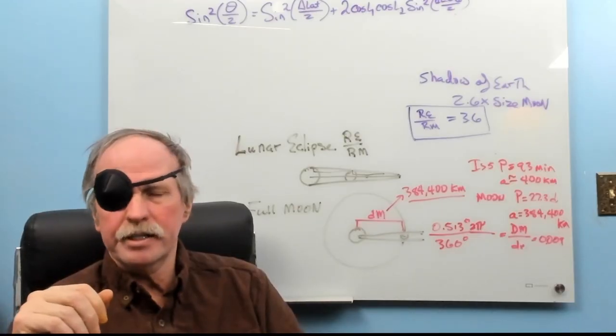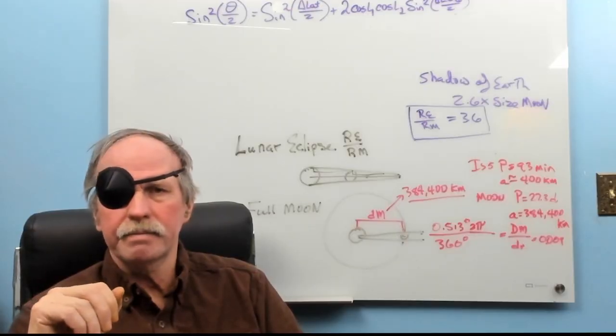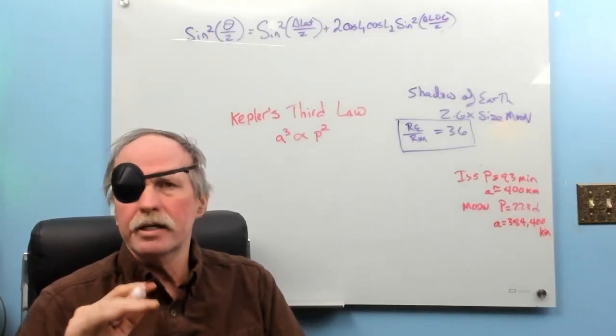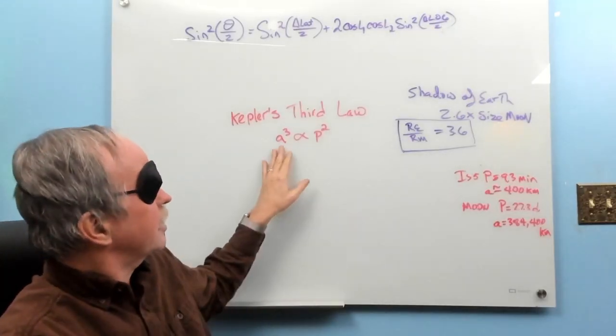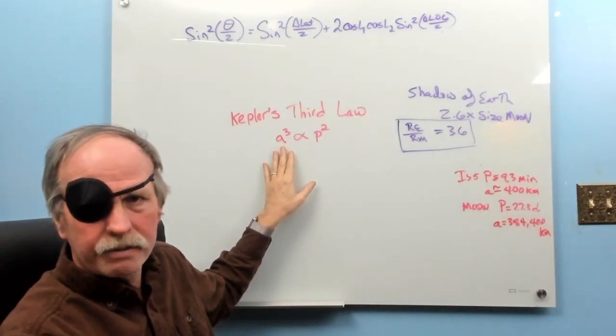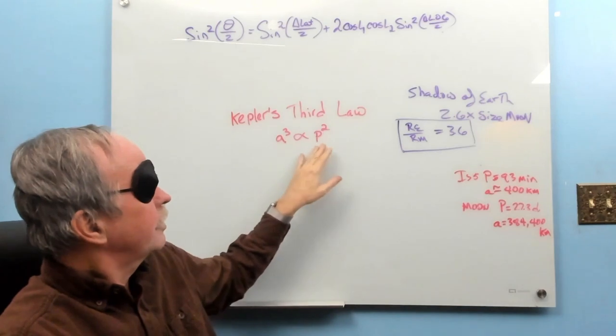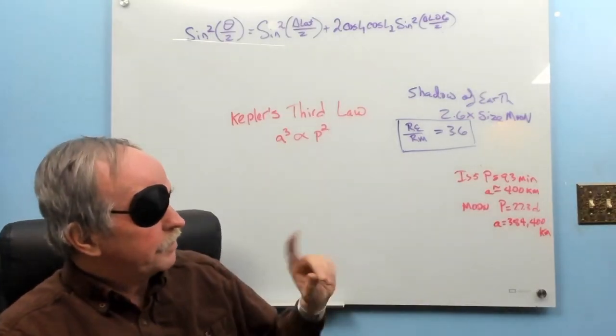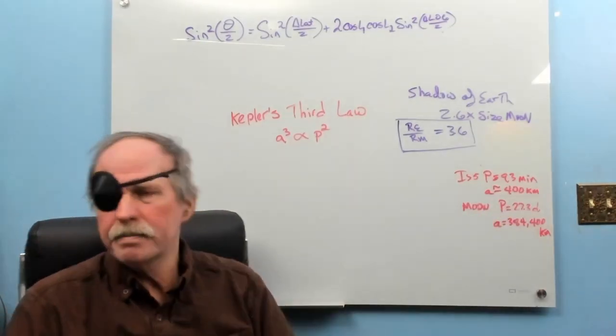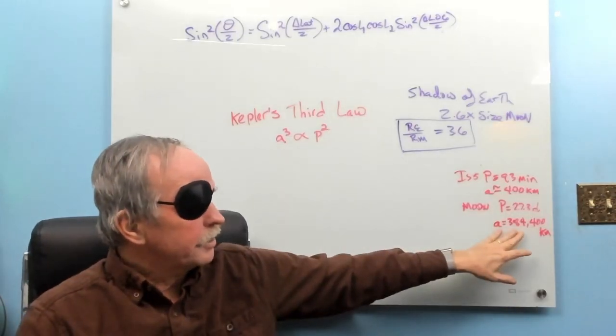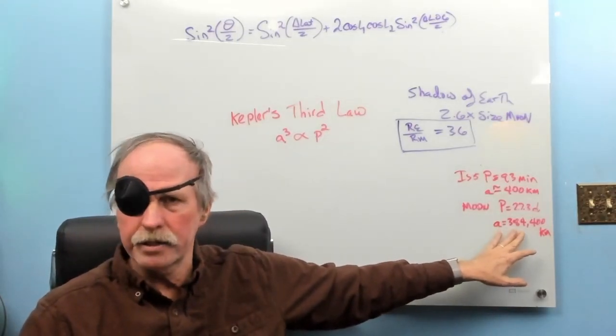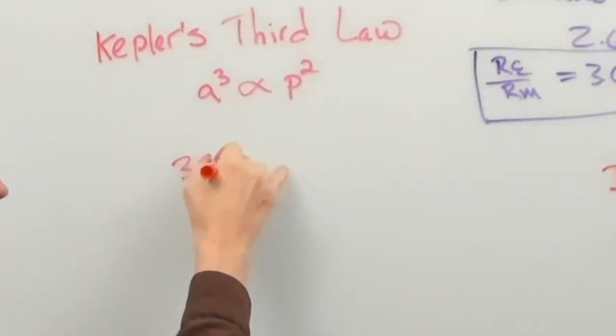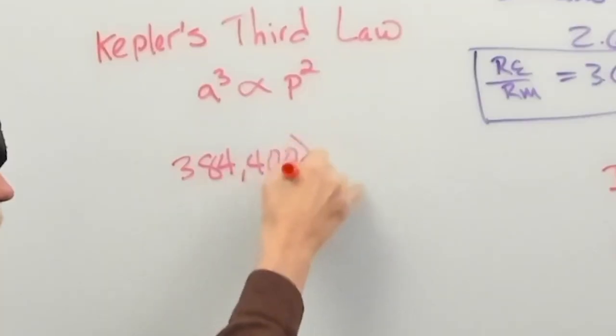But is there another measurement that we can take to try and figure out the radius of the earth? Turns out there is. Now, when describing the orbit of bodies, we look at something called Kepler's third law. And Kepler's third law says that the axis of rotation, or the radius of the orbit cubed, is proportionate to the time of the orbit squared. Now, for example, the moon's period is approximately 27.3 days. And its orbital distance is 384,400 kilometers.